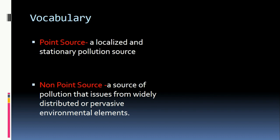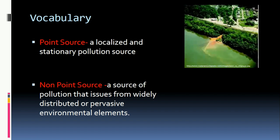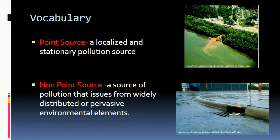Let's start with some vocabulary. Pollution can be sorted into two categories: point source and non-point source. Point source pollution is a localized and stationary source, like an outlet pipe for a factory. Non-point source pollution is a widely distributed, pervasive source, like an agricultural field or road runoff.